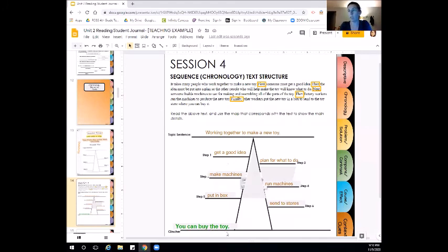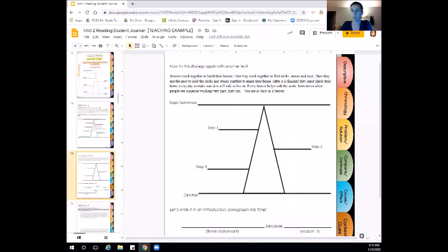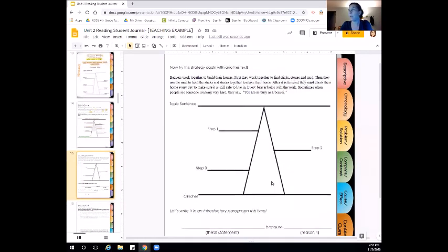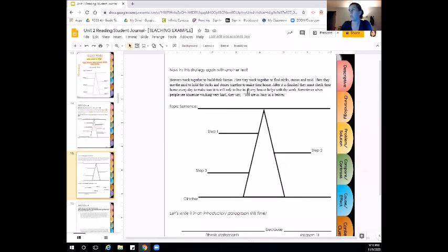So we're going to try mapping out a chronology text structure on our own. But first, before you start mapping, make sure that you read through and you highlight the keywords to help you decide what the topic sentence, your steps, and then the clincher. Good luck!